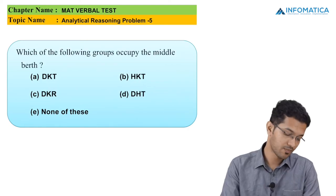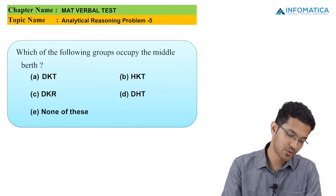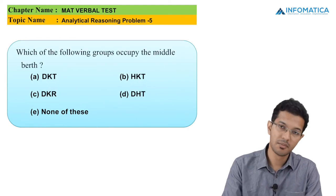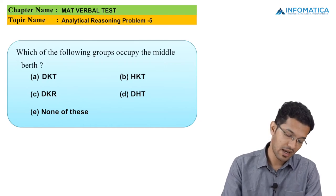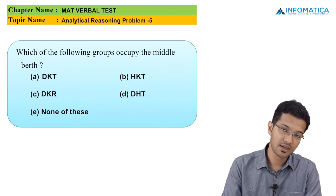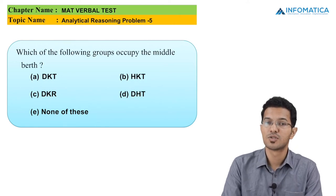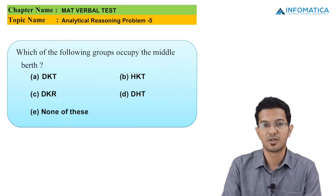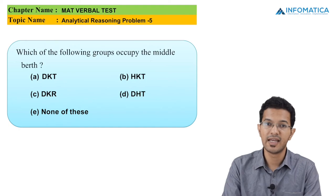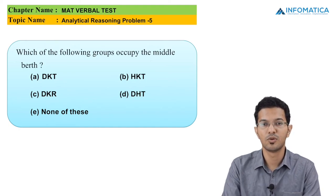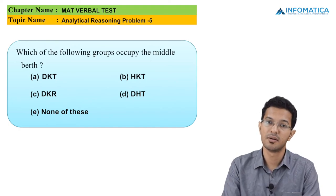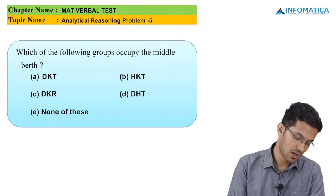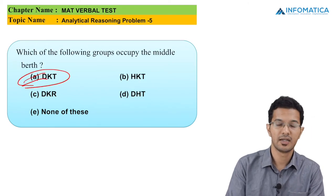The next MCQ asks which group occupied the middle berths: is it DKT, HKT, DKR, DHT, or none of these? From the table, D, K and T have occupied the middle berths. So the answer to this question is option A, which is DKT.